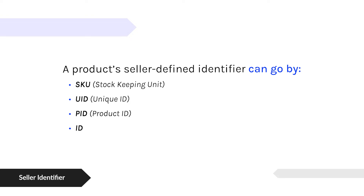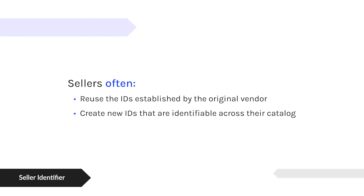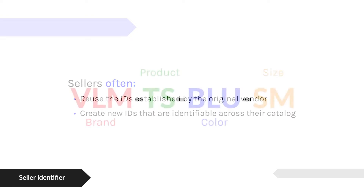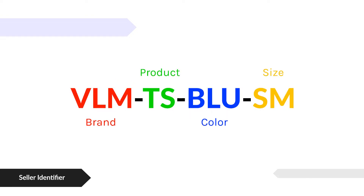Google in their feed spec calls it just ID. This merchant-defined SKU sometimes can come from their vendor, so maybe they're not the ones creating these SKUs. Maybe they're just using the SKUs from the vendor list of products that they're reselling, that they're retailing. But a lot of times they create a SKU that is an abbreviation of meaningful attributes of the product so that they can identify that product across their catalog without having to look at the product name.